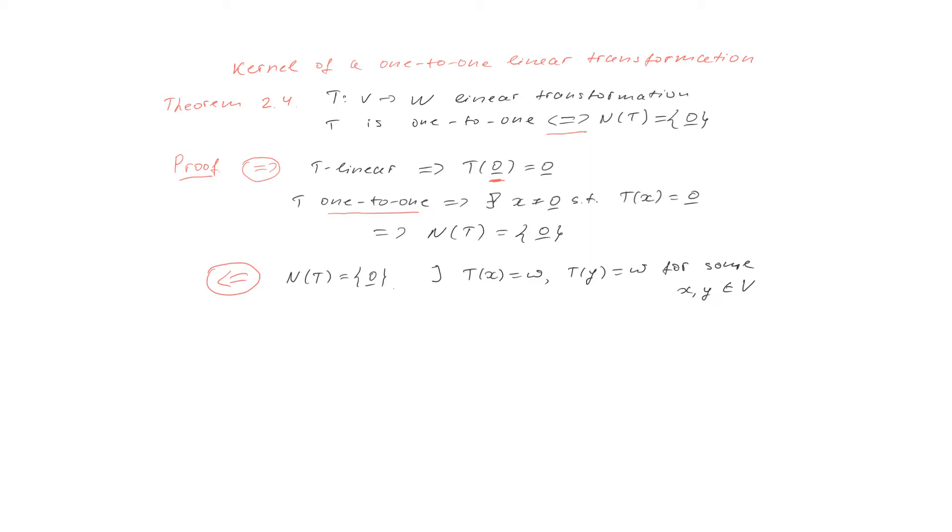Then we can use the standard way of proving uniqueness. We subtract T(x) minus T(y) and that will be w minus w and that will be zero. So now we have this equality and from this equality we want to conclude that necessarily x should be equal to y.